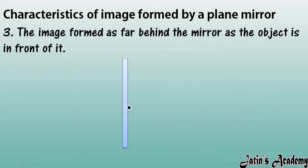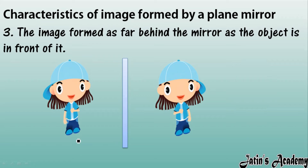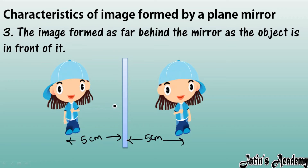Next, the image is formed as far behind the mirror as the object is in front of it. For example, if this boy is standing five centimeters away from the mirror, his image will also form five centimeters behind the mirror. When you move back from the mirror, your image also moves back the same distance.